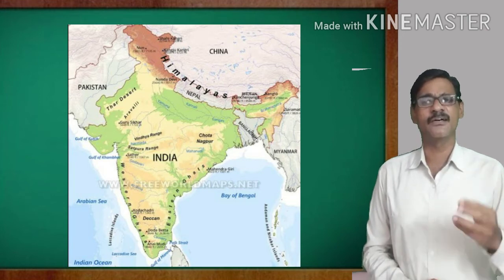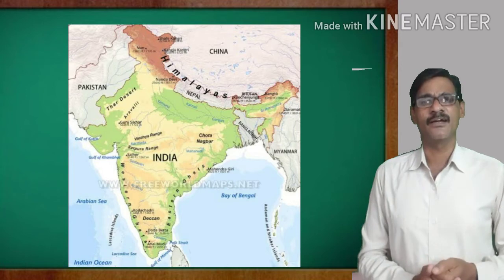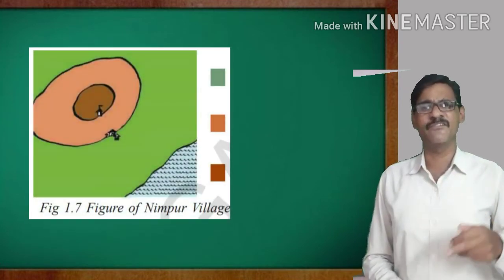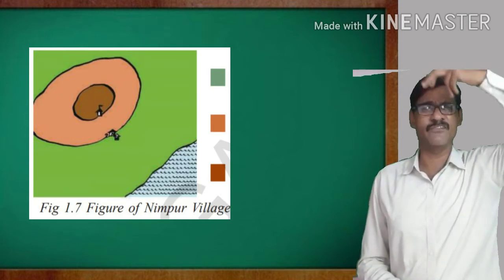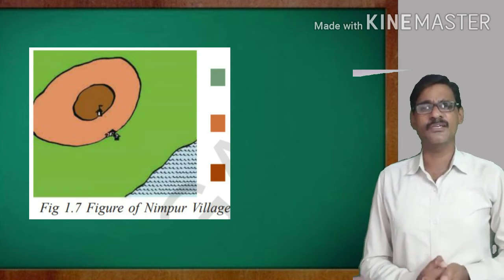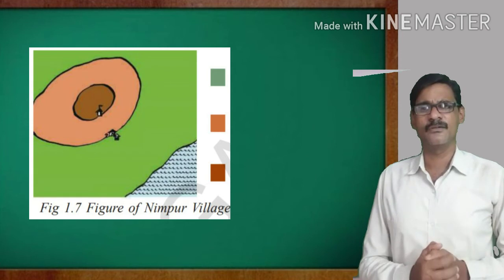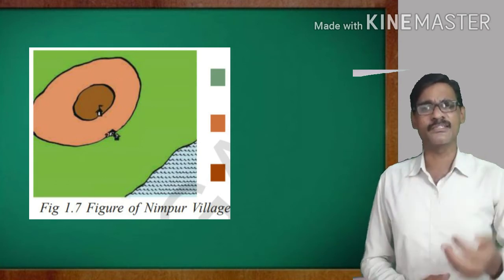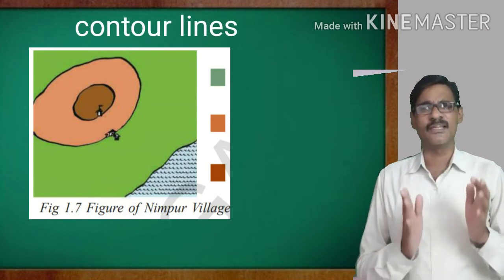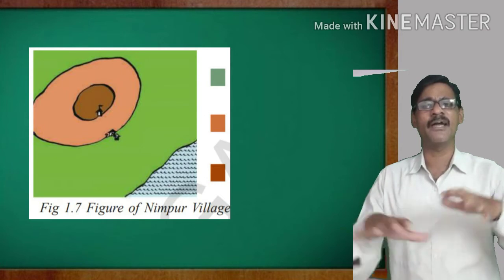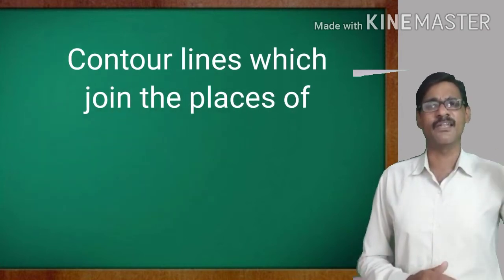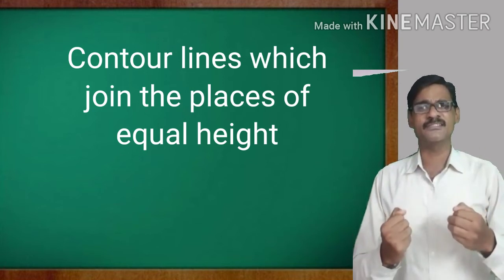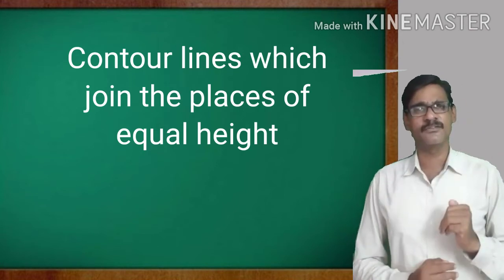They have given the three height zones here. To indicate the height on the map, they have used the different colors. The shade of color is the main tool to identify the height of that land. In Ningpur village map also, we have the three lines. One is the 50 meters line, next one is the 100 meters line and another one is the 150 meters line. To show that heights in the map, we are using the lines. These are called as the contour lines. Contour lines, the lines which join the places which have the same height from the mean sea level.